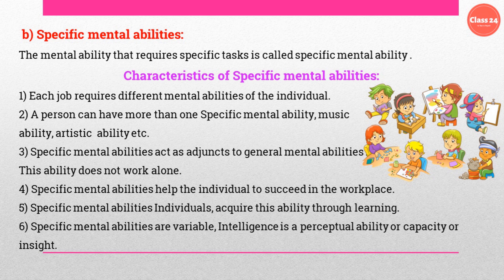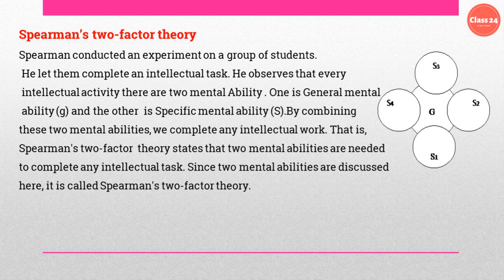Intelligence is a perceptual ability, capacity, or insight. Spearman conducted an experiment on a group of students, letting them complete an intellectual task. He observed that in every individual activity there are two mental abilities — one is general mental ability (G) and the other is specific mental ability (S). Spearman's two-factor theory states that two mental abilities are needed to complete any intellectual task.